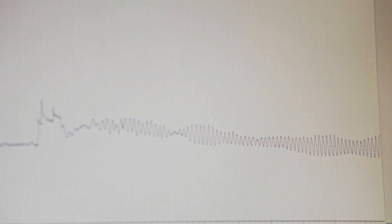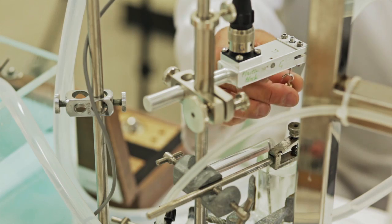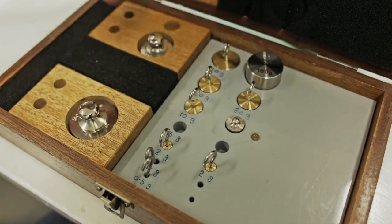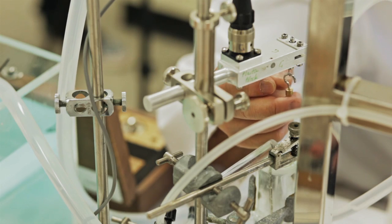Before starting to measure the force of contraction it is necessary to calibrate the transducer in order to determine that load on the transducer is proportional to the displacement on the transducer.